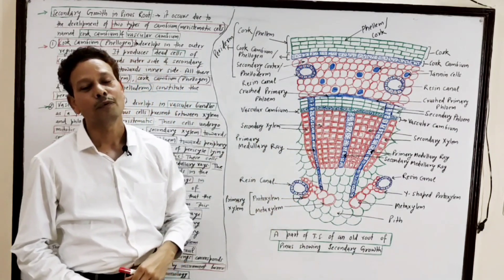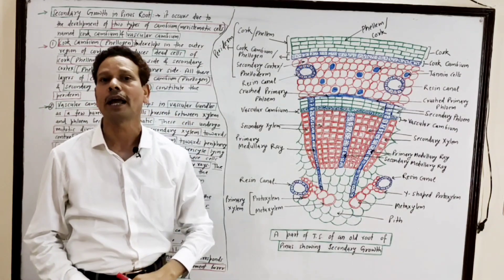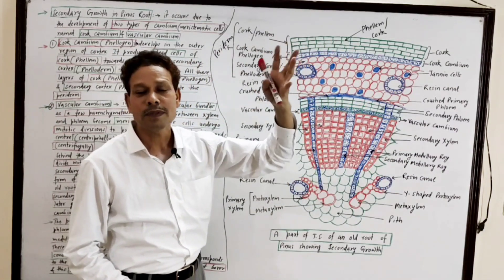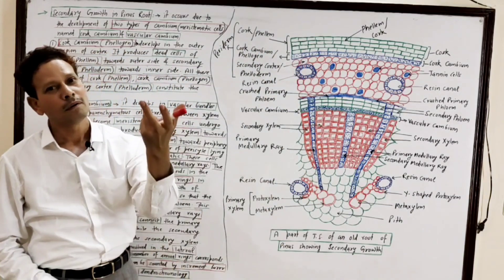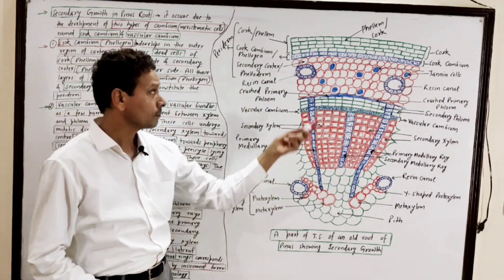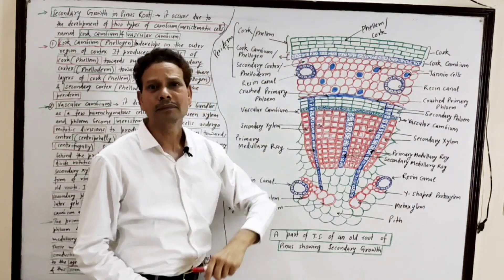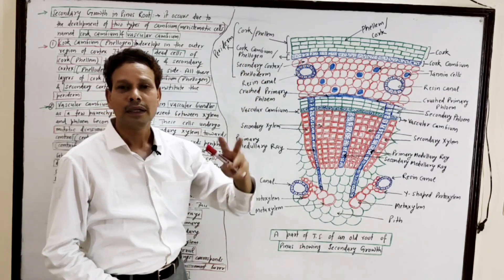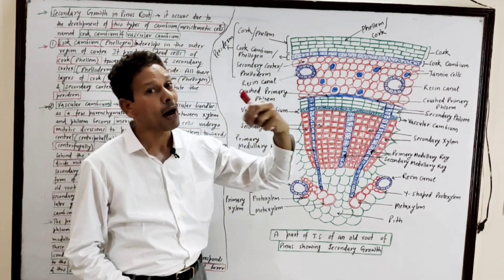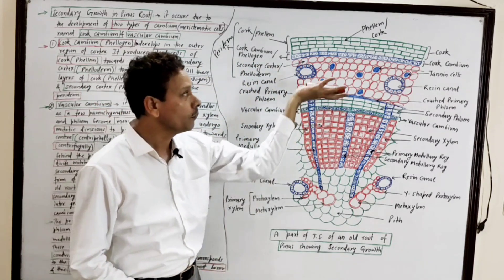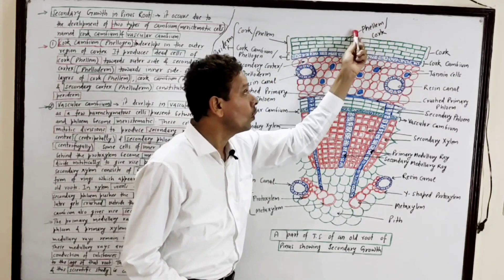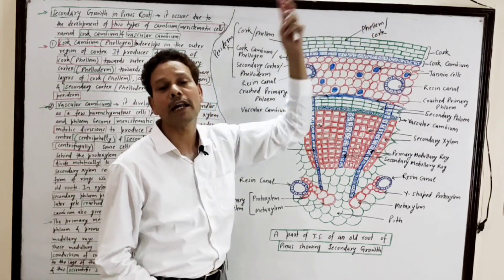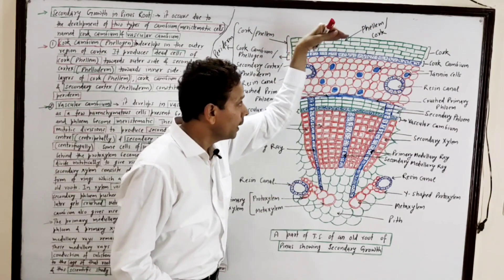First, I will discuss cork cambium. This cork cambium develops in the outer peripheral region of the primary cortex. It has meristematic cells and is named phellogen. It undergoes mitotic divisions to give rise to dead cells, or cork cells — this is phellem — in the outer peripheral region.